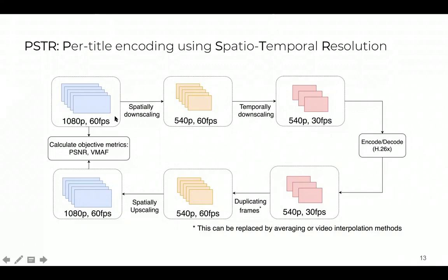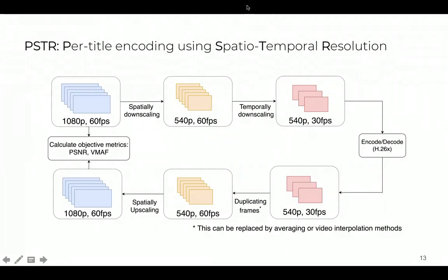Let's assume our video is 1080p and 60 frames per second. We first spatially downscale it to 540p, and then temporally downscale it to 30 frames per second. So our representation would be 540p at 30 frames per second, which we encode, and after decoding, we temporally and spatially upscale it to get the same specification as the original video, and then we can calculate our objective metrics. We simply use duplicating frames for temporal upscaling and bicubic for spatial upscaling, but these methods can be replaced by more sophisticated upscaling methods to enhance encoding efficiency.